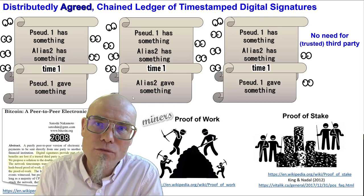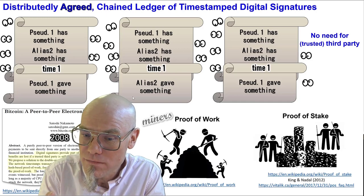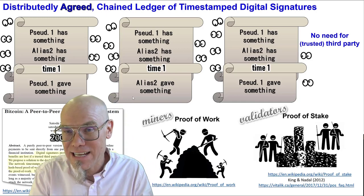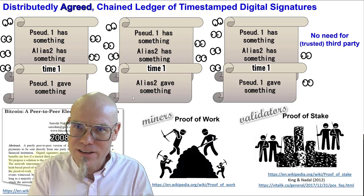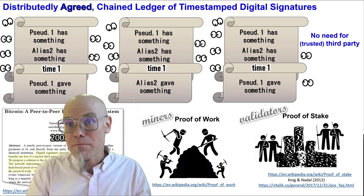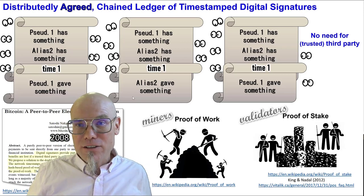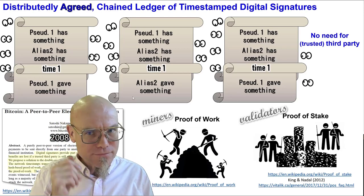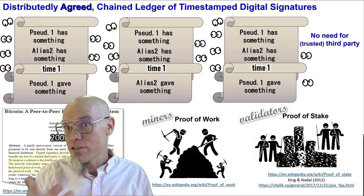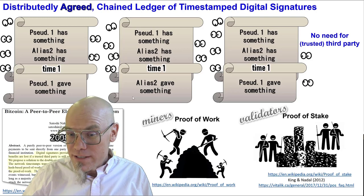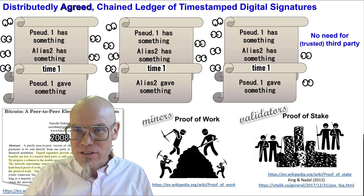If you did the right thing, you get a reward, and that's also assigned with some random function. These are called validators, because after you put your chips in the middle, we validate whether you did the right thing. So there are miners and validators — but these are not the only two consensus algorithms. There are many different consensus algorithms out there, and there's a lot of innovation going on. Proof of stake is much more energy efficient than proof of work, and we will talk more about that in the next video.